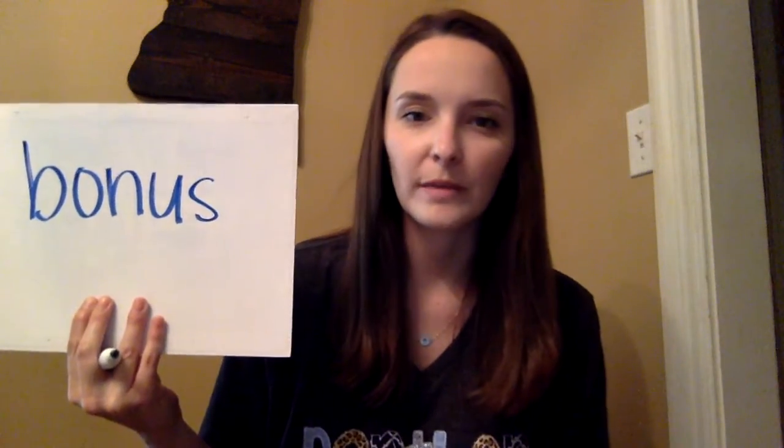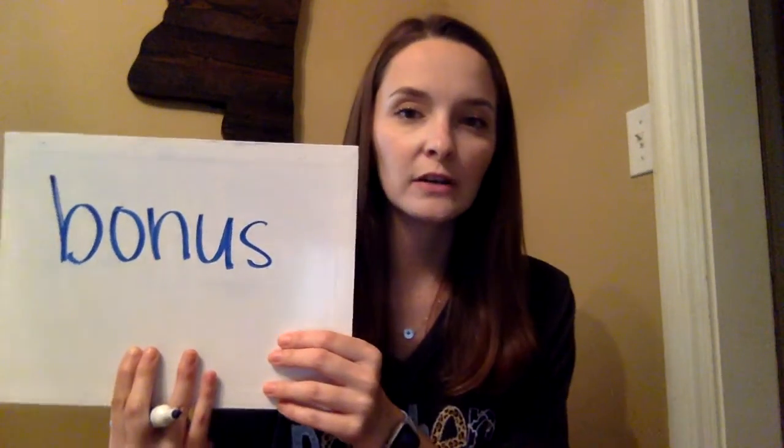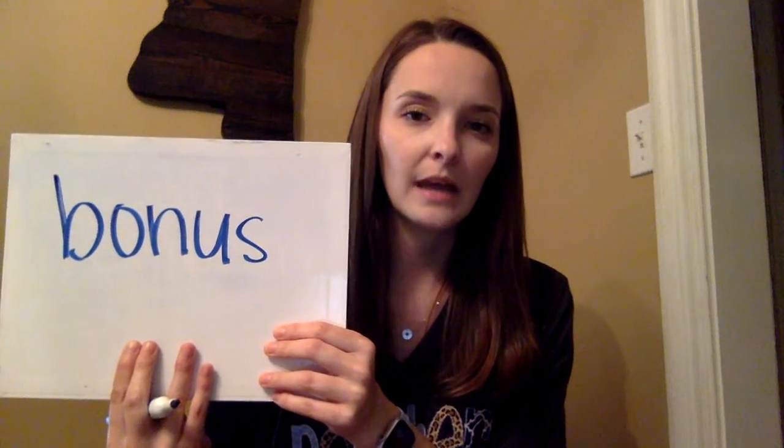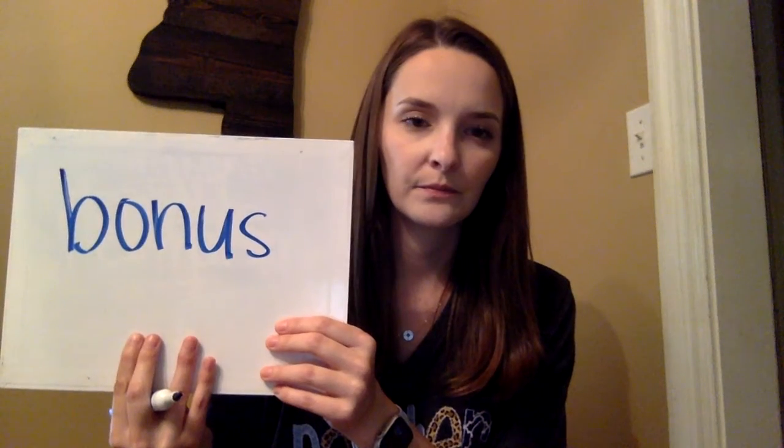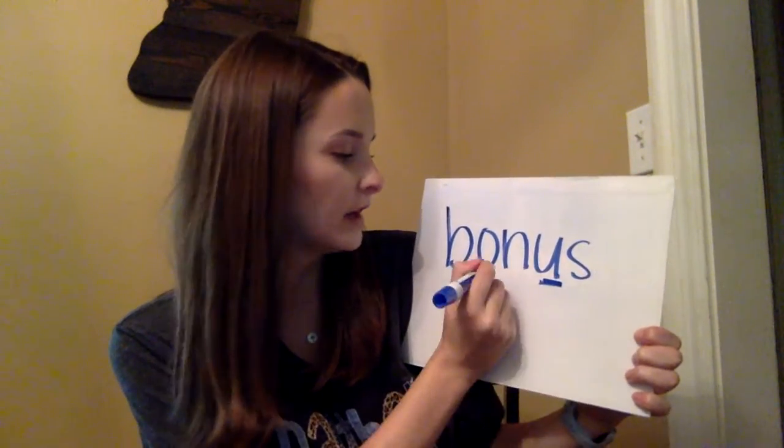We're going to do a few together, just like we did in class, following the exact same steps. The first word we're going to do — say this word out loud for me: 'bonus.' The first thing you do when you begin to syllabicate a word is identify your vowels. The vowels in this word are O and U, so we're going to underline and label them.